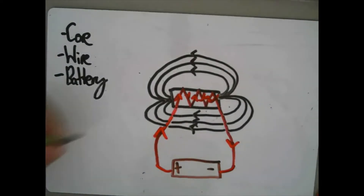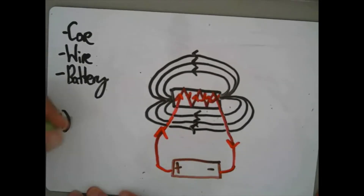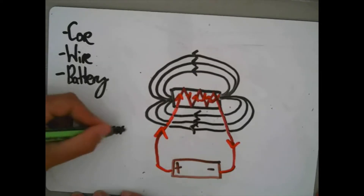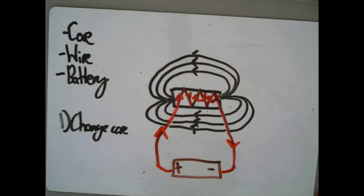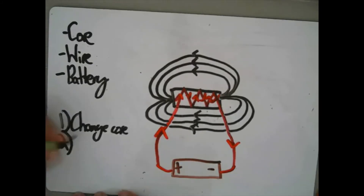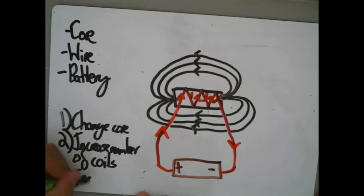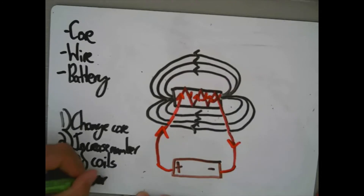You can change the strength in three ways. First, you can change the core — iron is easy to magnetise but loses its magnetism quickly, whereas steel is more difficult to magnetise but keeps its magnetism for longer. Second, you can increase the number of coils. Third, you can increase the current being supplied by the battery or cell.